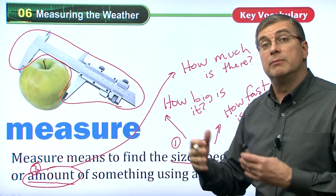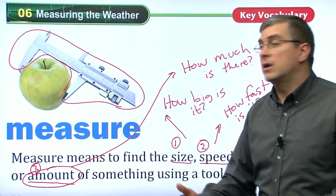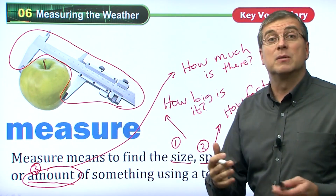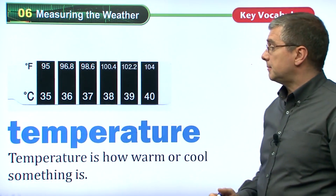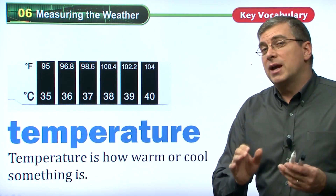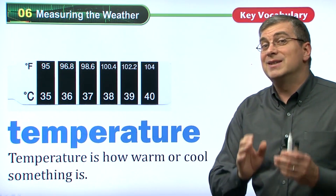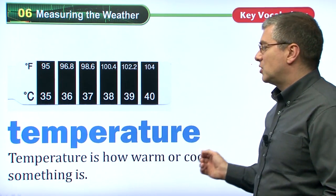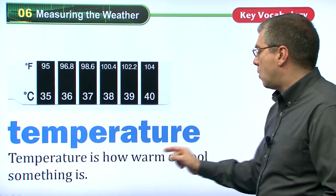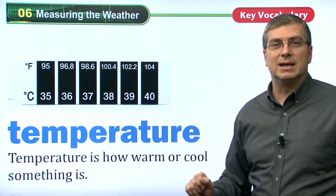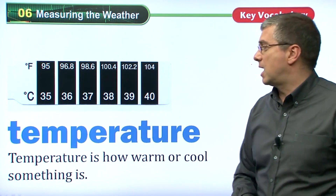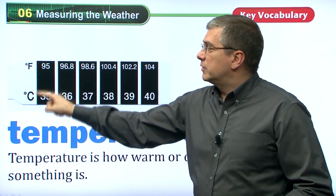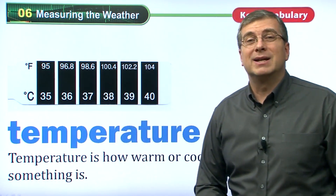Tools help us observe things. We're observing weather — we are measuring the weather. So that's what it means to measure something. Now, when we measure things, one thing about the weather we can measure is the temperature. Temperature is how warm or cool something is — remember I taught you that word in unit 5.